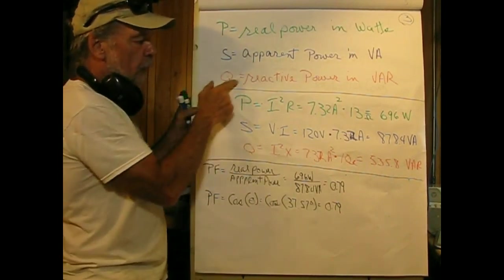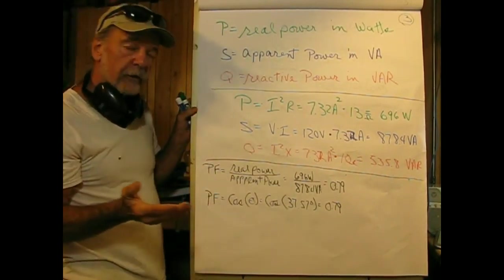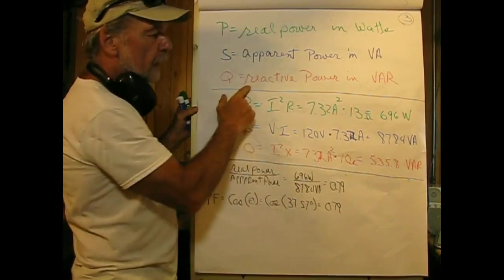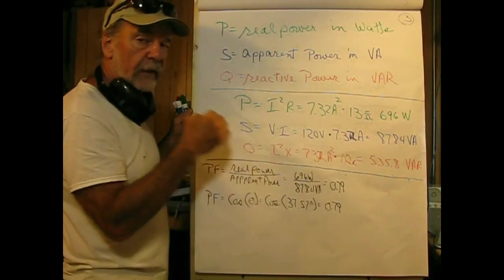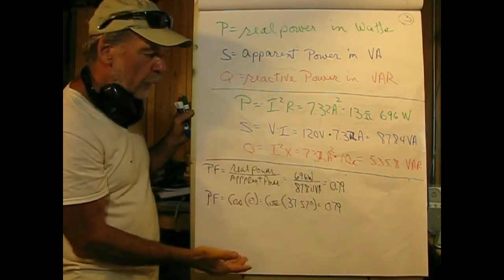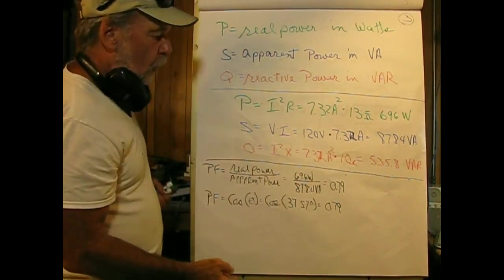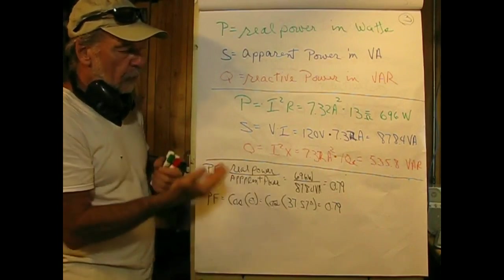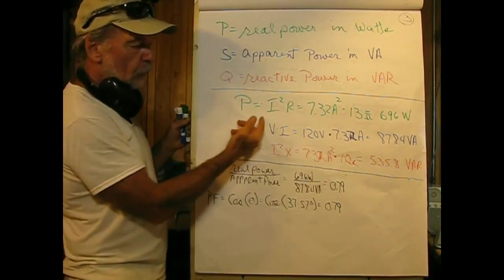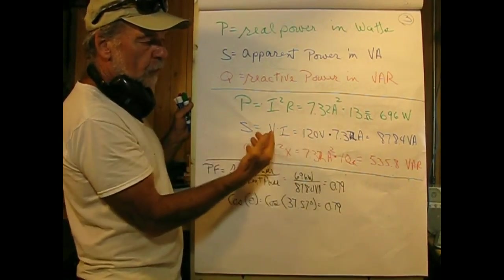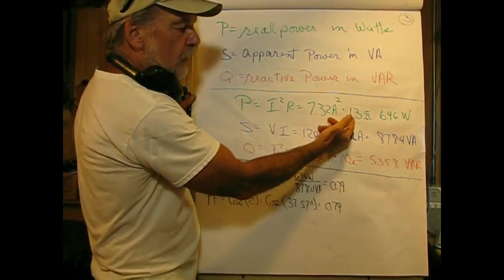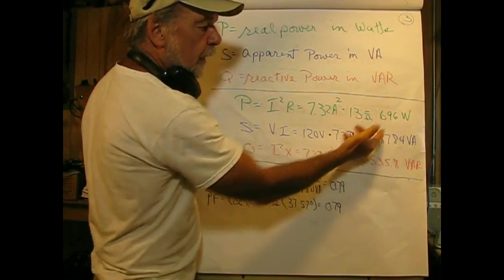Finally, we've got Q, which is reactive power, and its unit is VAR - volts, amperes, reactive. So if we determine that for our circuit, P equals I squared R, which is the value we just calculated, times 13 ohms, gives us 696 watts. This is the real component.